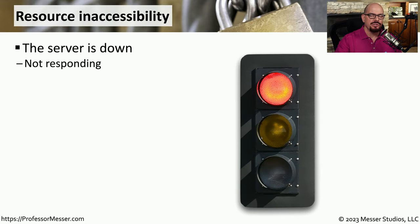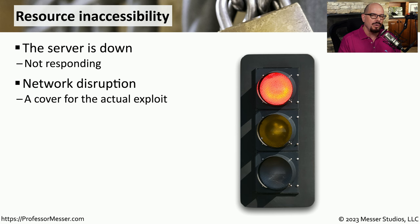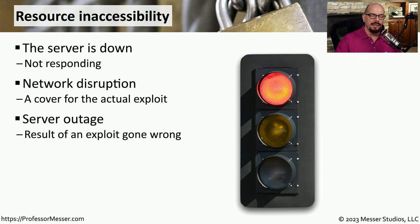Sometimes not being able to access a resource on your network is relatively innocuous and not an IT security concern. But there are times when a resource being unavailable could be an indicator of compromise. For example, a server may suddenly be inaccessible because an attacker was trying to find a vulnerability and, in that process, caused the server to crash. It may also be that network disruption in one part of the network is caused by an attacker transferring data, or they may be creating a problem on the network to run other exploits elsewhere. This attempt to exploit a vulnerability can certainly cause a server to fail, and there have been cases where a system failed because someone tried to find a known vulnerability in it.